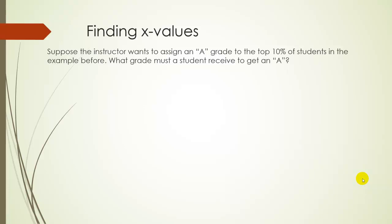So suppose the same class, and suppose the instructor decides that they want to give an A grade to the top 10% of students. So the logical question is, what is the cutoff grade? What grade must a student receive to get an A? So looking at what we have, again we know we have a normal distribution. We know the average score is 76.